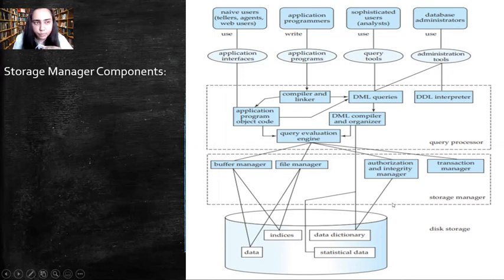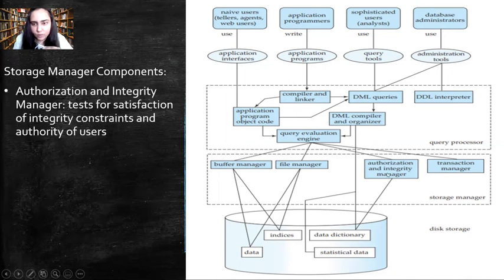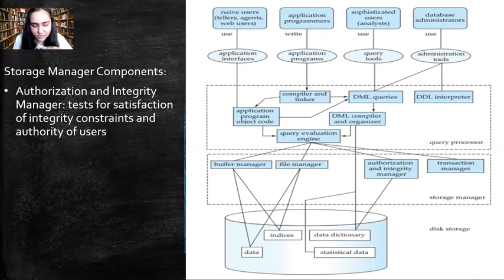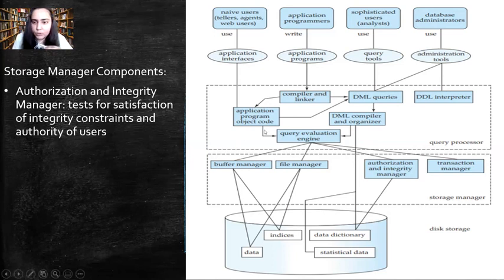Now we'll look at the different components of the storage manager. The first is the authorization and integrity manager. This provides authority to users — it decides what kind of data should be accessed by which user. For example, a company manager would have access to all employee details, but a regular employee would not have access to that information.